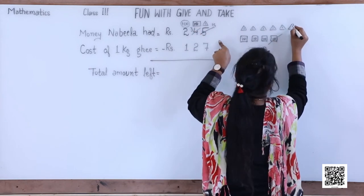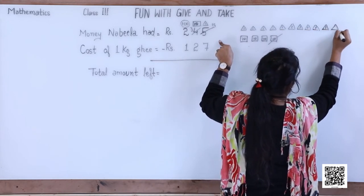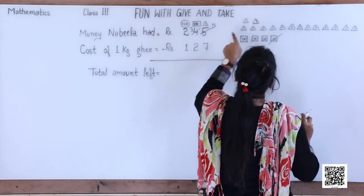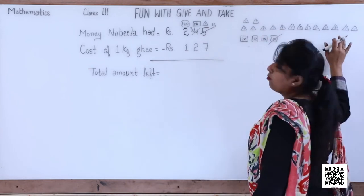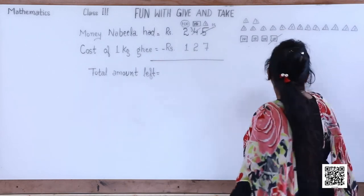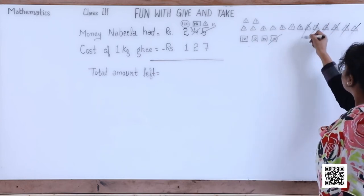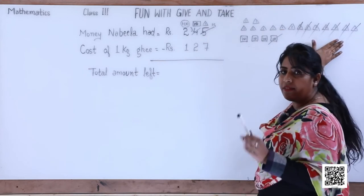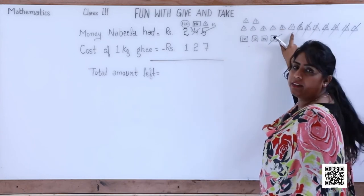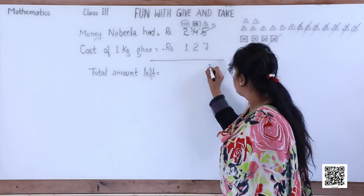Five were already there, and ten more came — so fifteen in total. We cancel seven: first, second, third, fourth, fifth, sixth, seventh. How many triangles are left? We are left with five, six, seven and eight — that is eight triangles. So fifteen minus seven is eight. We write eight in the ones place.